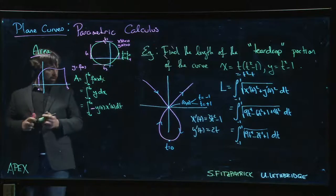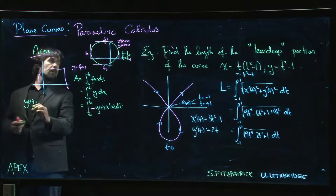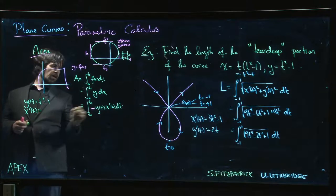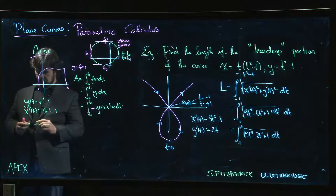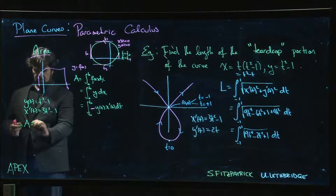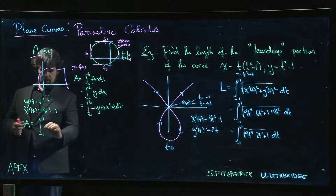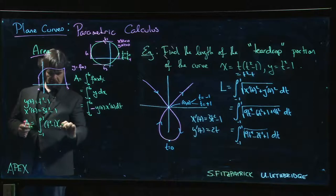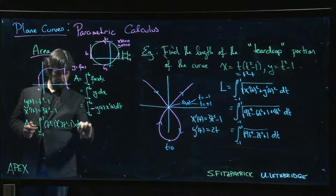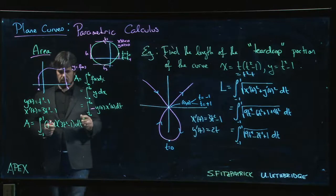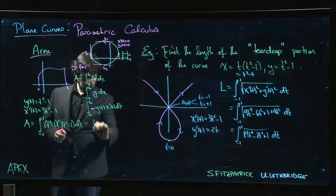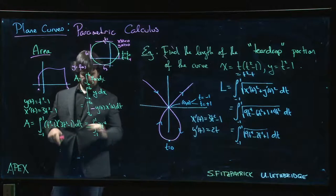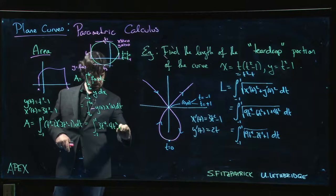That said, let's think about finding the area of this teardrop. For the teardrop we have y(t) is t² - 1, x'(t) is 3t² - 1. The area for this one should be, if we've got this right, the integral from -1 to 1 of y(t), which is t² - 1, times x'(t), 3t² - 1, times dt. That's an integral I can actually evaluate.